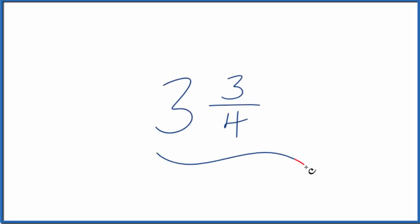Let's write the mixed number 3 and 3 fourths as an improper fraction. So right now it's a mixed number because we have the whole number, that's the 3, and then the fraction, the 3 fourths.